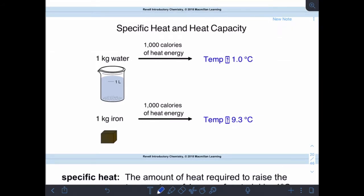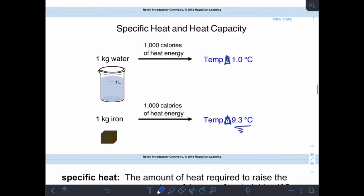All right, so our next concept is a thing called specific heat and heat capacity. Okay, they're two separate things, but they are related. Okay, so with a kilogram of water, if I put a thousand calories of heat energy into that water, my temperature change will be one degree Celsius. But if I have the same amount of iron, one kilogram of iron, and I put the same amount of energy into it, the iron will have a temperature change of 9.3 degrees Celsius.